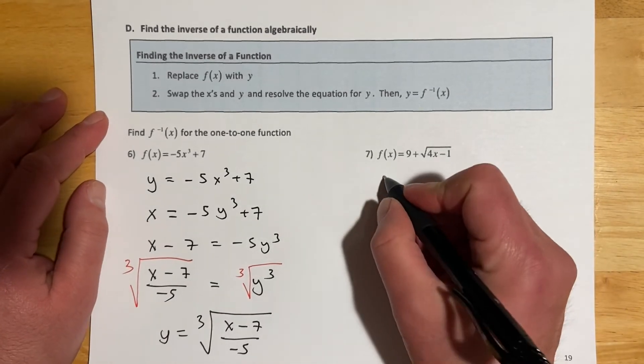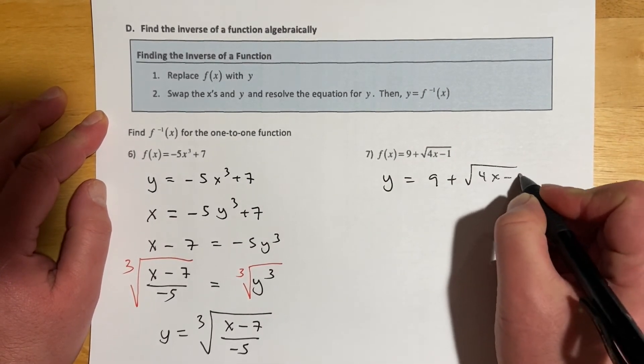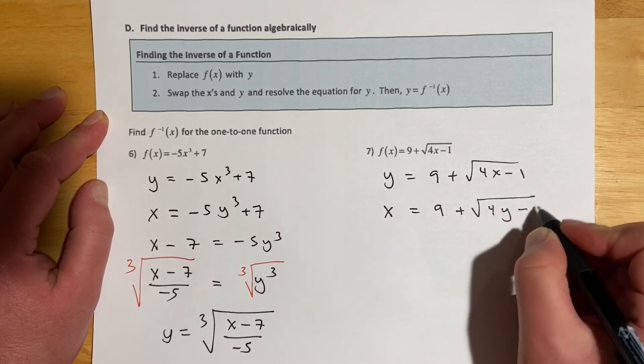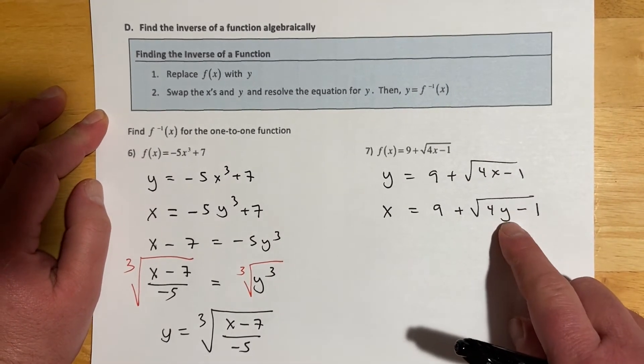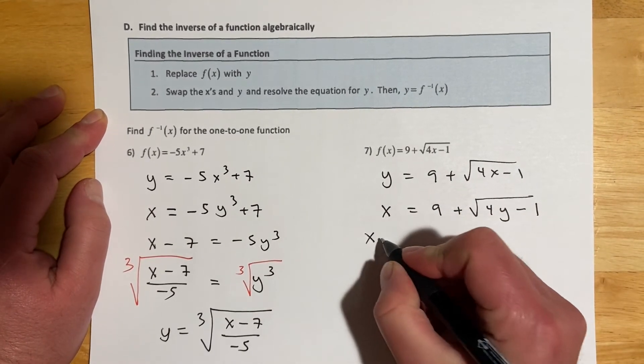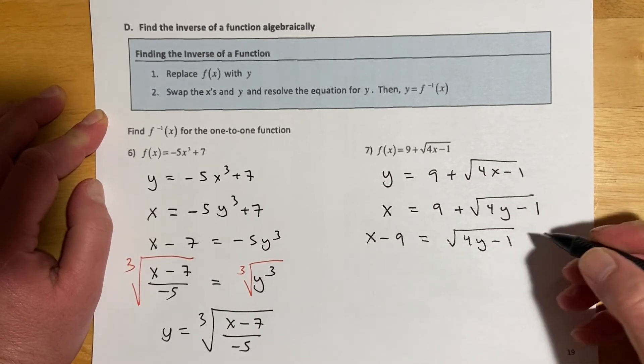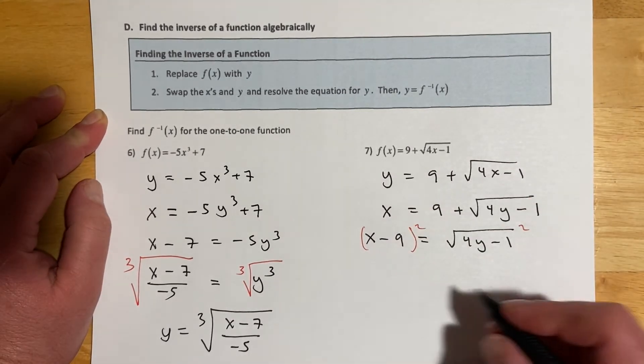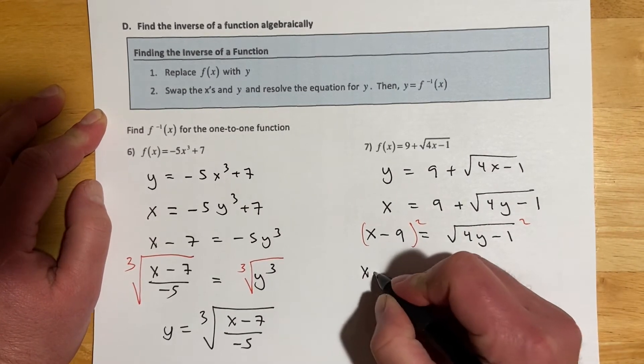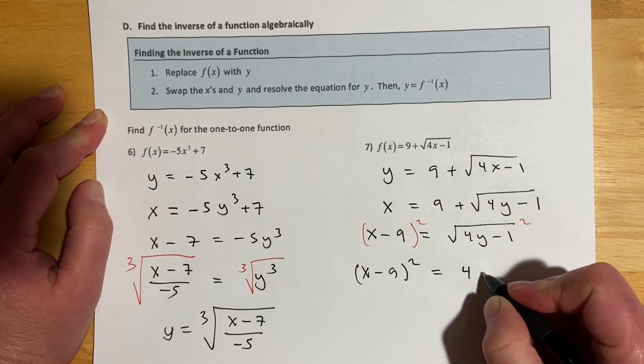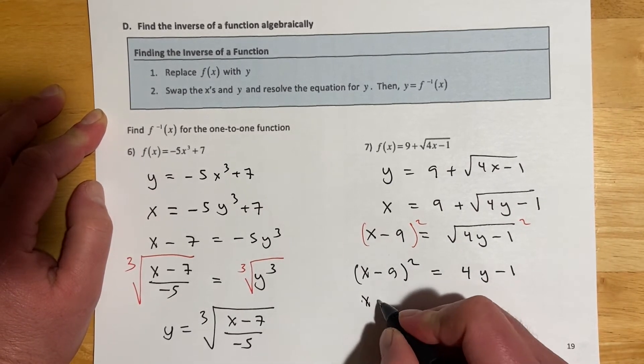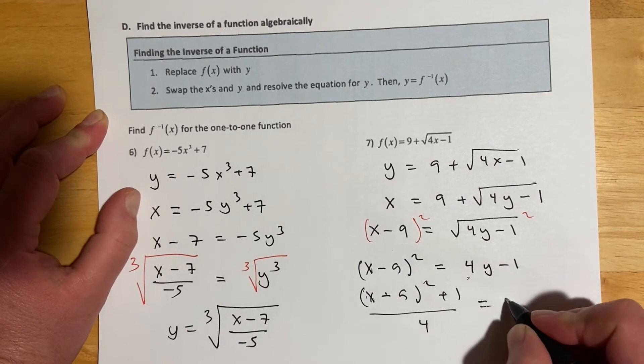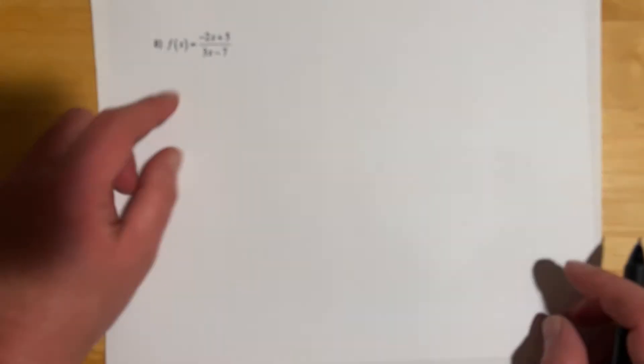This next one, we'll go y equals 9, 4x minus 1. We swap our x's and y's, so x equals 9 plus 4y minus 1. Then we just got to get y by itself. We'll subtract the 9 over. Let's square both sides. And it looks like on the homework, I think they left that as a squared. Then we'll add the 1 over, and then we'll divide the 4 at the same time because I'm almost out of room. And so there's that.